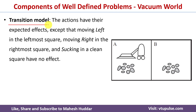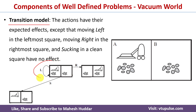The next component is the transition model. The transition model is a representation where we apply all possible actions to a given state and observe the resulting new states. I will show one part of the transition model here and discuss the complete model in the next video. Let's assume we are in the state where the vacuum cleaner is in location A and both locations are dirty.